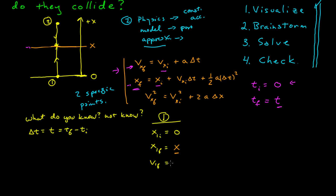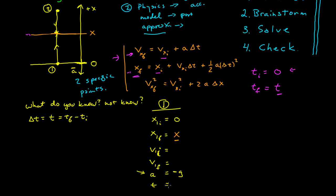The initial velocity of particle 1 is unknown — it's launched with some value v sub 1i that I don't know yet. The final velocity v sub 1f is also unknown. I was told that the speed of particle 1 is twice the speed of particle 2, but exactly what that speed is I don't know, so I'll come to that later. The acceleration is constant, with magnitude g, and since acceleration is a vector, I go back to the coordinate system: freefall acceleration points toward the center of the earth, so with positive x upward, a is negative g. The time t is also unknown.